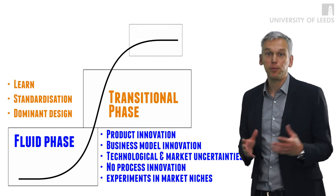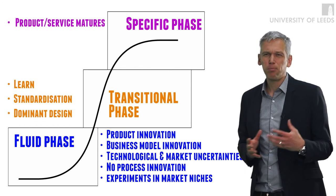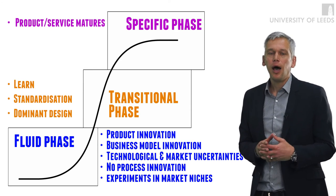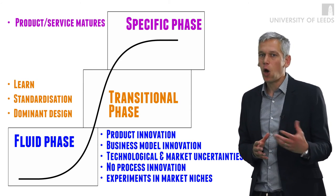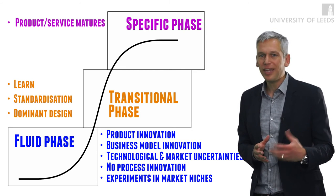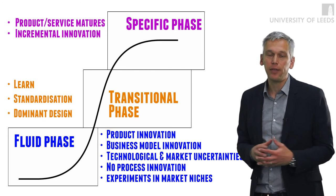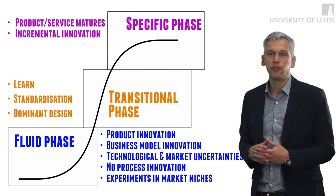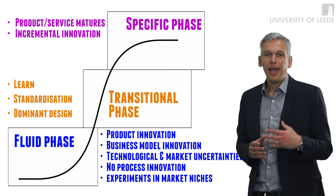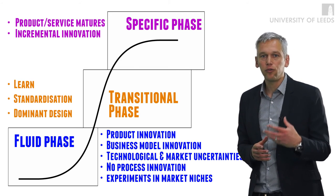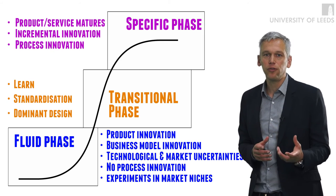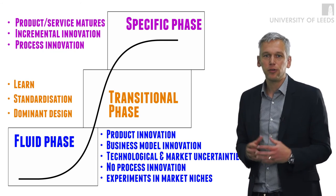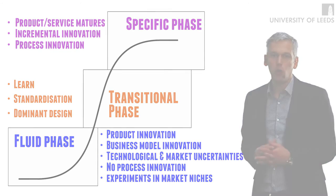The last phase of the innovation curve is a specific phase — the phase where the product or service comes to maturity. But this is not to say that there is no innovation involved. A lot of incremental innovation happens in this phase because companies try to sustain the product or service in the market. At that stage companies are also involved in process innovation because they try to reduce the cost of the product so it can stay on the market for longer.